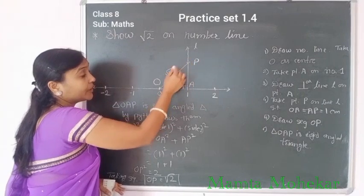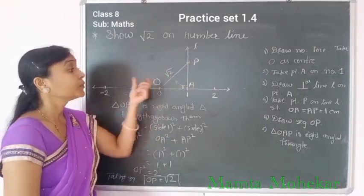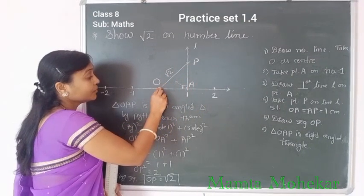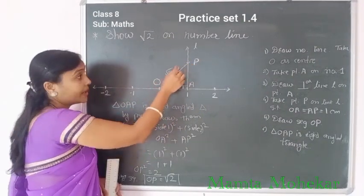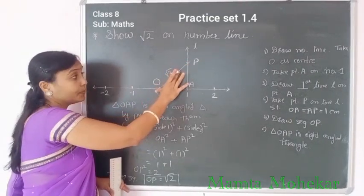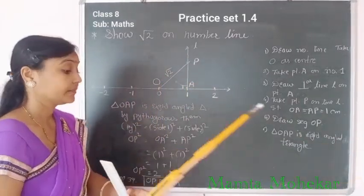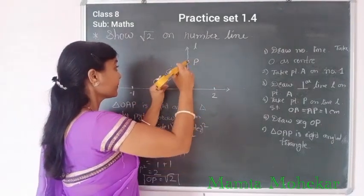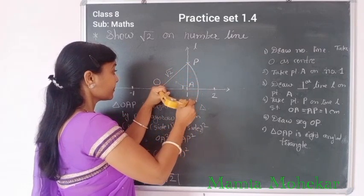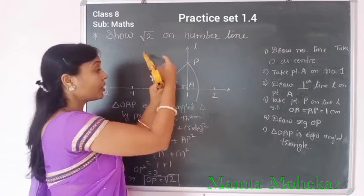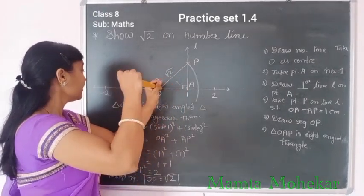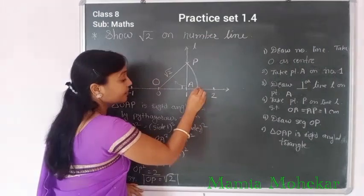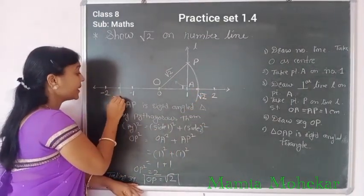At point P we get root 2, but we want to show root 2 on the number line. So take OP as a radius in the compass, take that distance, and make an arc on the number line. This point gives us root 2. If you draw an arc on the left side with the same radius, you get the negative point, giving us minus root 2. In this way we show the root 2 number on the number line.